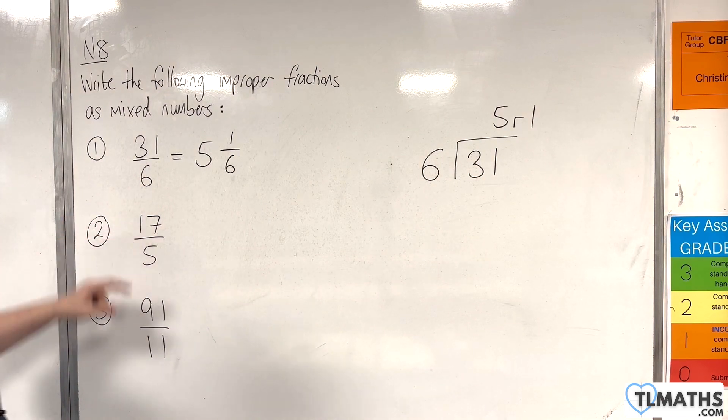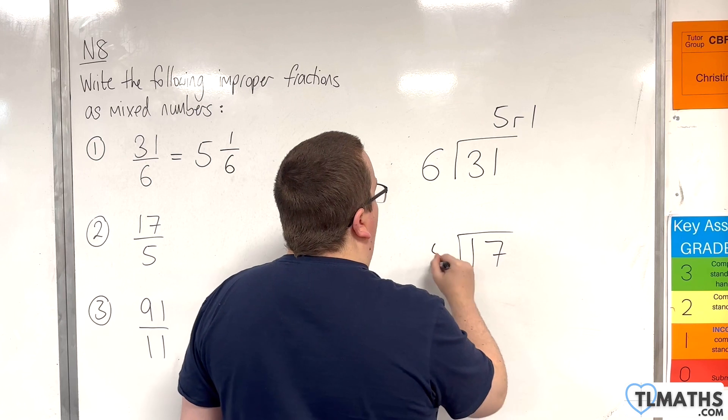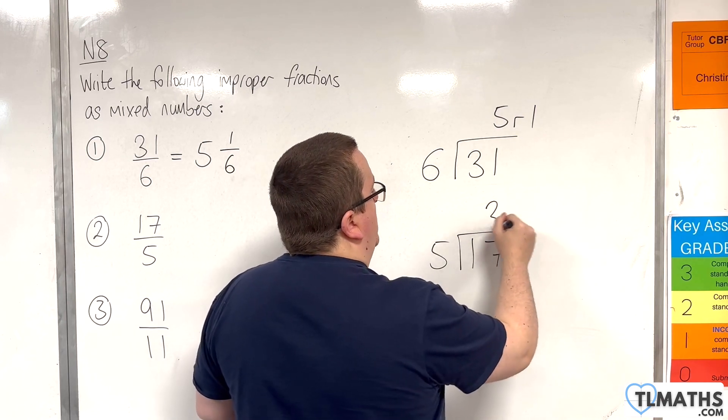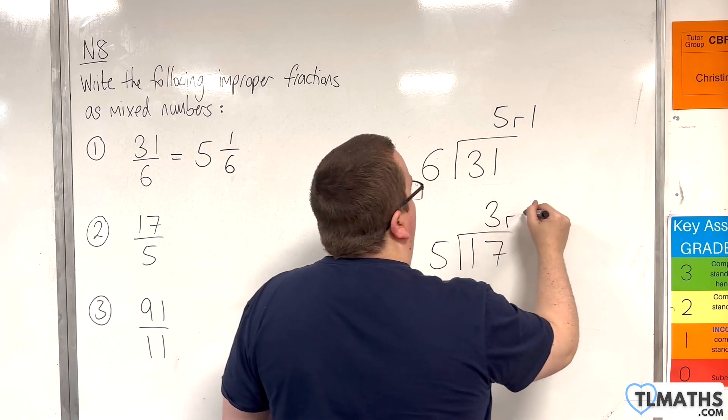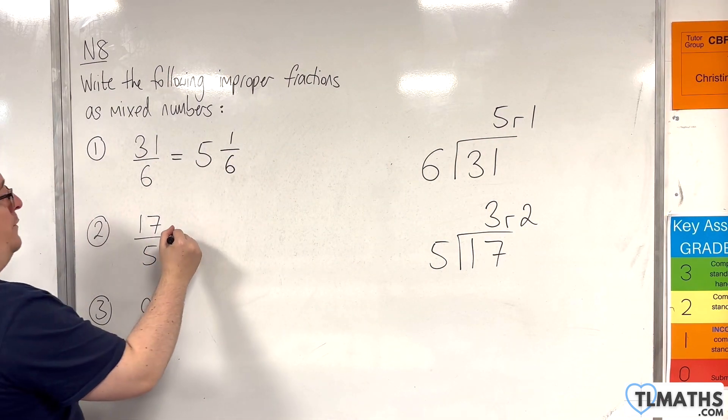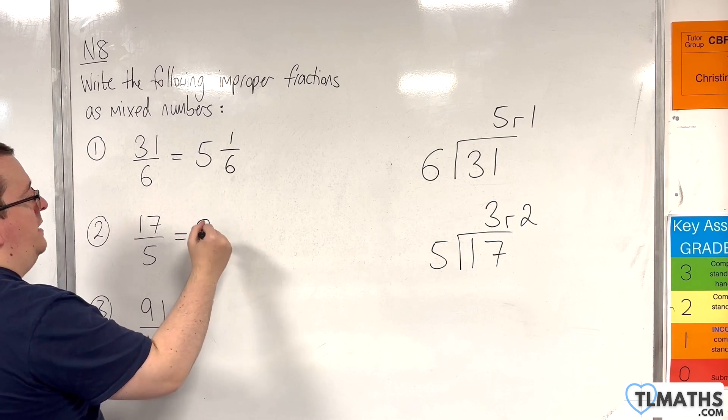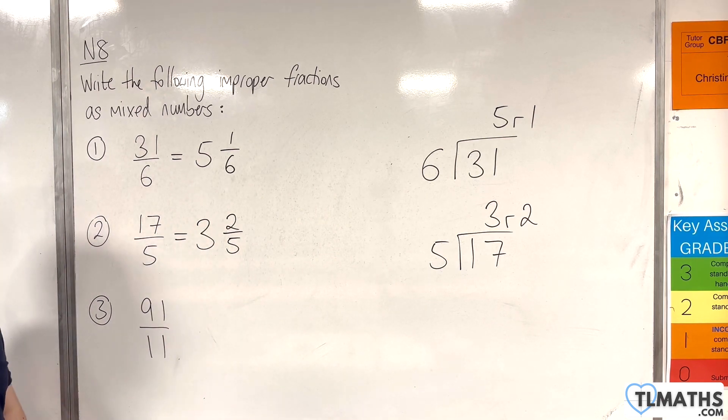17 over 5. Well, again, we're going to look at how many 5s go into 17. That would be 3, because 3 5s are 15, and there's a remainder of 2. So, 17 over 5 will be 3 with 2 fifths left over. So, 3 and 2 fifths.